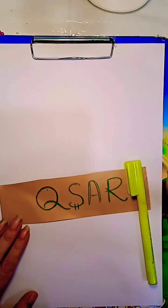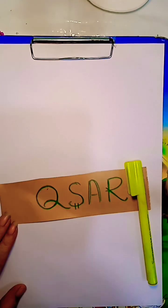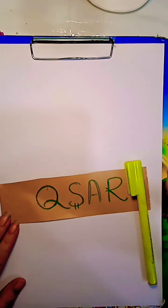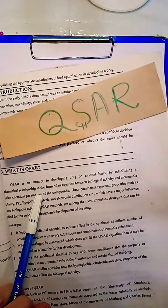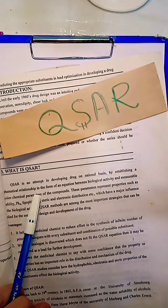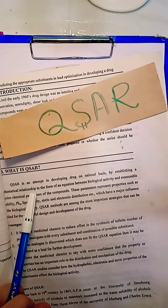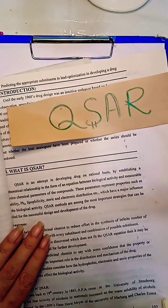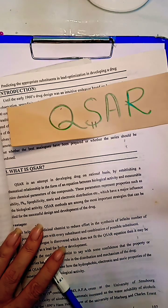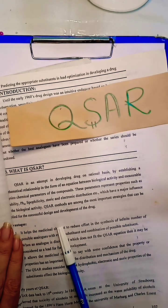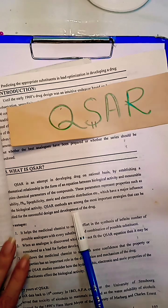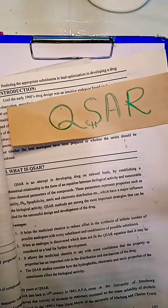Hello everyone, today my topic is QSAR, Qualitative Structure Activity Relationship. What is QSAR? An attempt in developing drug on rational basis by establishing a mathematical relationship in the form of an equation. These QSAR methods are among the most important strategies that can be applied for successful drug design and development of drug.